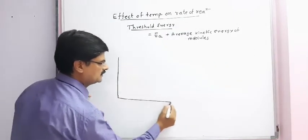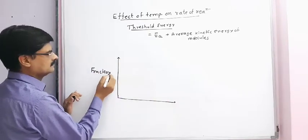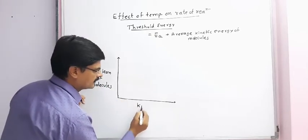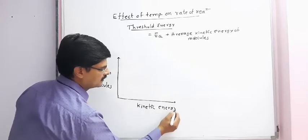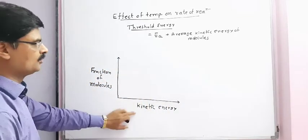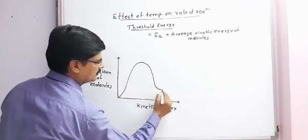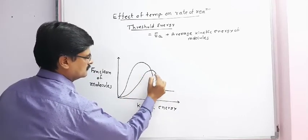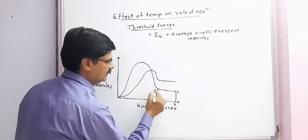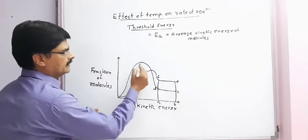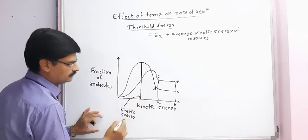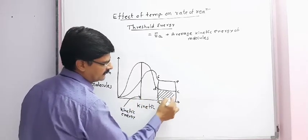This is the graph of fraction of molecules versus kinetic energy. By joining the points and labeling A, B, C, D, E, and F, we can identify different regions representing kinetic energy distributions of the molecules.